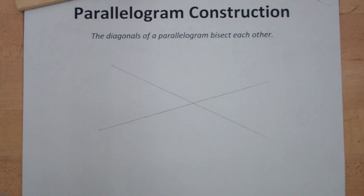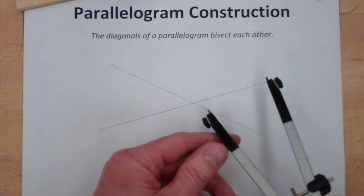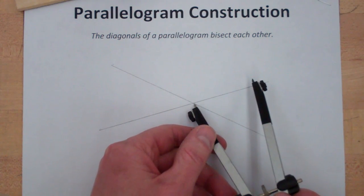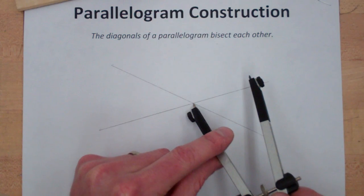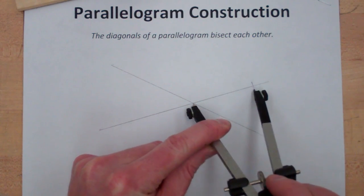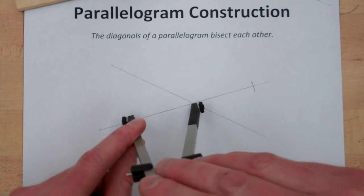These would be the diagonals, so what I'm going to do is first set my compass to, I don't know, yay big, and take the center of the compass and stab it in at the intersection of the diagonals. I'm going to make a mark over here and that exact same distance on the other side of that diagonal.